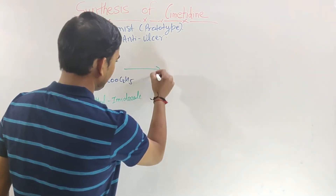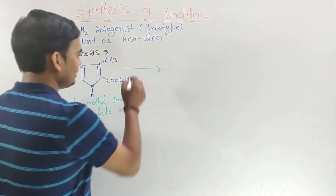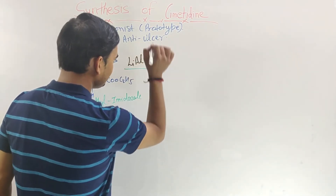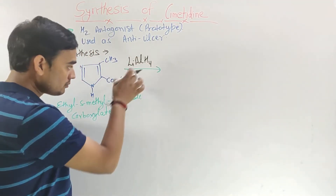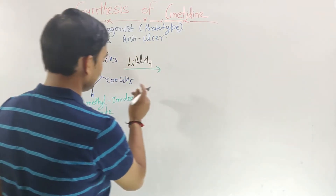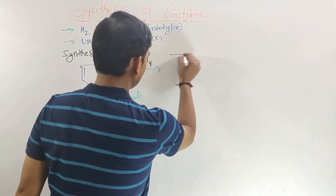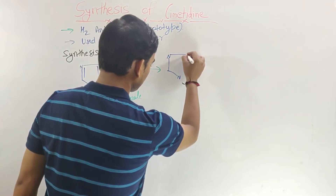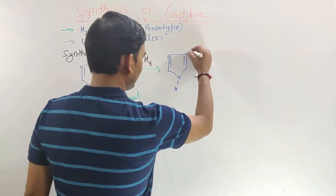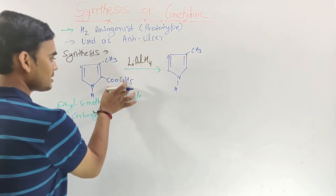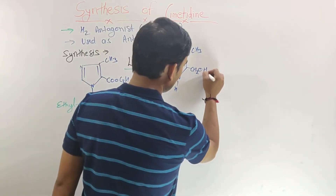This ethyl-5-methyl-imidazole-carboxylate undergoes reduction in the presence of Lithium Aluminium Hydride (LiAlH4), which is used for the reduction purpose. By this reduction, we get the next intermediate: the imidazole ring is retained with the CH3 group, and the ester group C double O, C2H5 is converted into a methanol group, giving CH2OH.